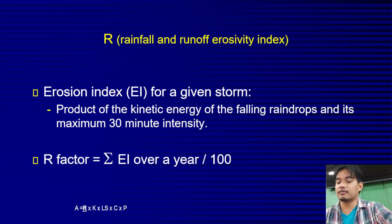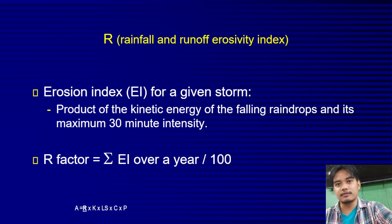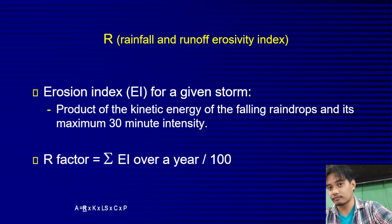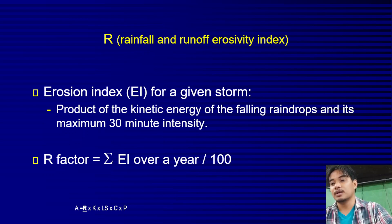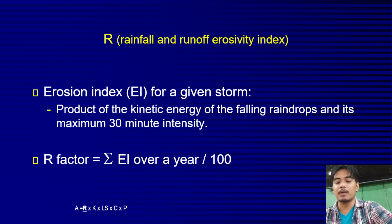The first factor is the R factor, or the rainfall erosivity index. Rainfall erosivity is the ability of rain to cause erosion. The erosion index (EI) for a given storm is the product of the kinetic energy of falling raindrops and its maximum 30-minute intensity. Within 30 minutes, we can get the erosion index for a given storm.